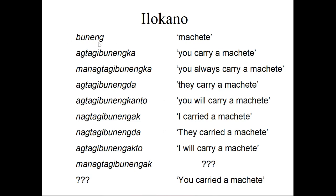Starting with 'machete,' for example, we have buneng. Then we have ag tagi buneng ka, meaning 'you carry a machete.' So we know that ag tagi and ka are adding some kind of 'you carry' meaning. We don't necessarily know yet if ag tagi is 'you' or if ka is 'you.' But then man ag tagi buneng ka means 'you always carry a machete' — the only difference from ag tagi buneng ka is the man at the start. So man means 'always.' Breaking things down like that with logic is the key here.